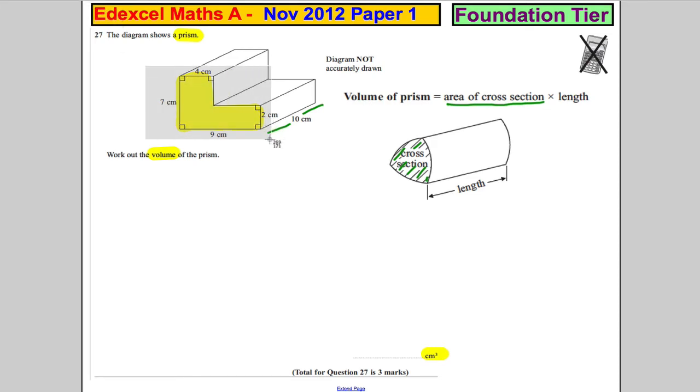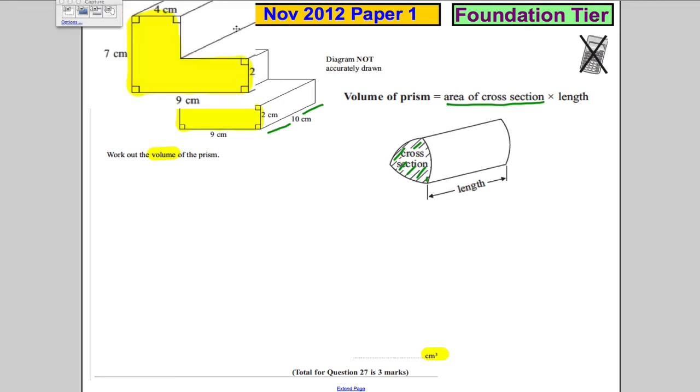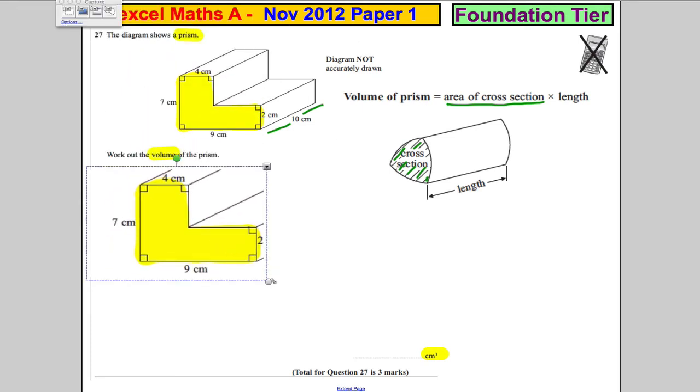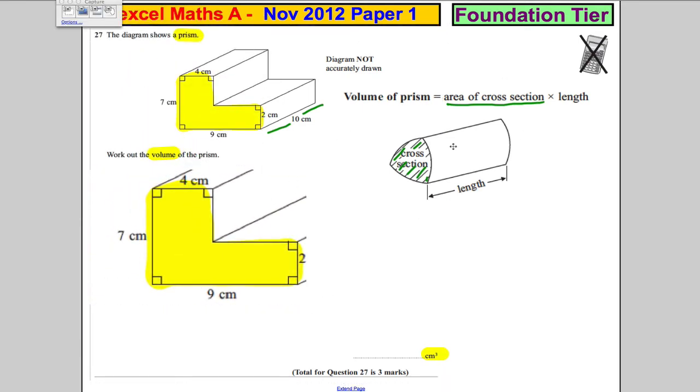To work out the area of the front, let's break this shape up into two things we can actually work out. The area of this is 4 times 7, so 4 multiplied by 7 is 28 centimeters squared.